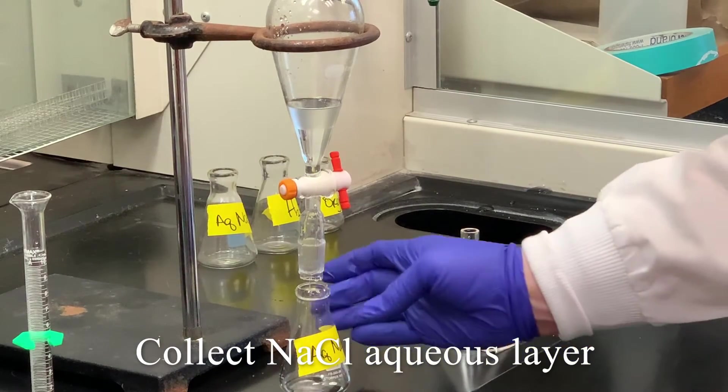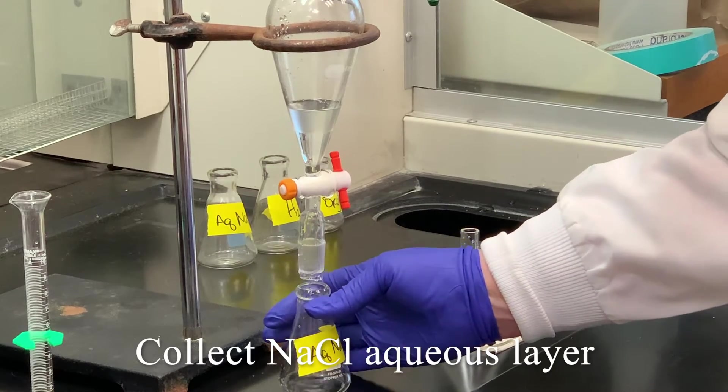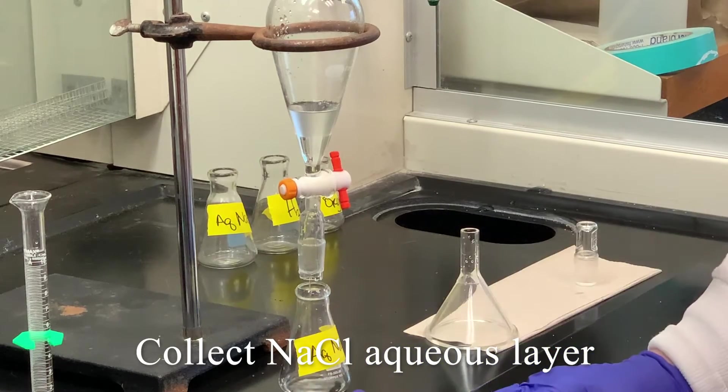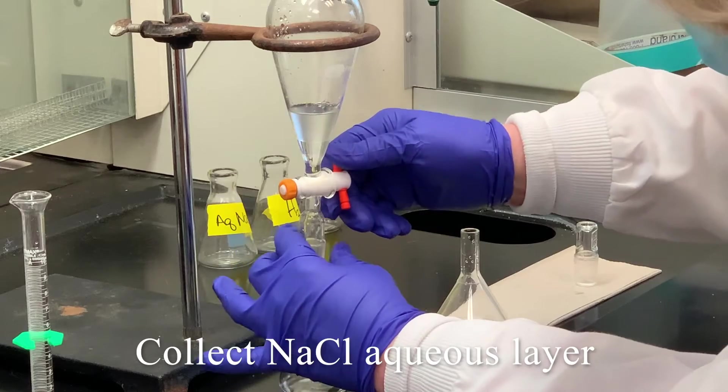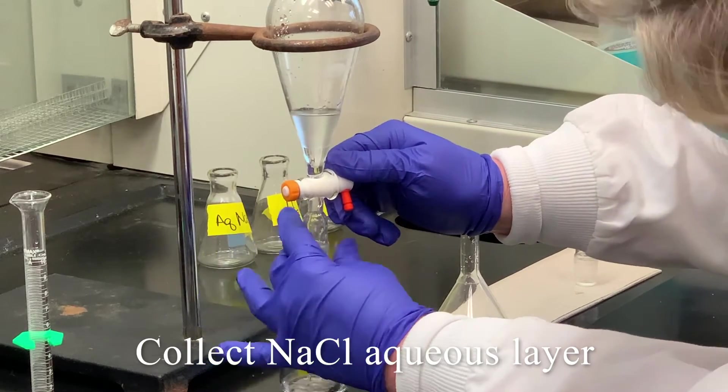And then we're going to drain off this layer into the aqueous sodium chloride flask. And take care. We have such a small amount that we're trying to remove. I'm using a small Erlenmeyer flask to do that. Typically, it's a good idea to collect in a flask. But you want to make sure that you don't turn it wide open because it can splash or spill.